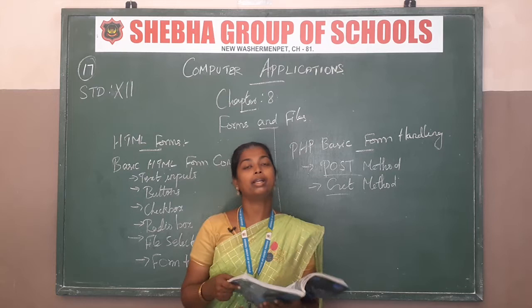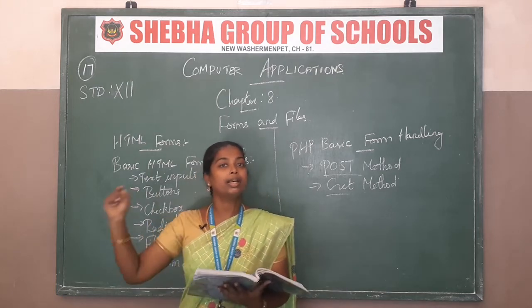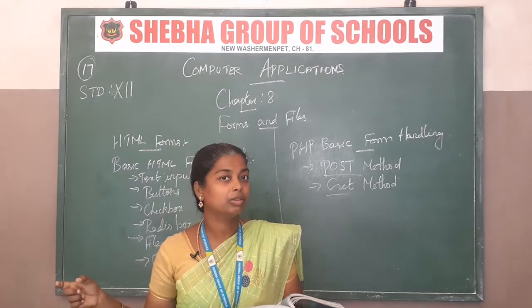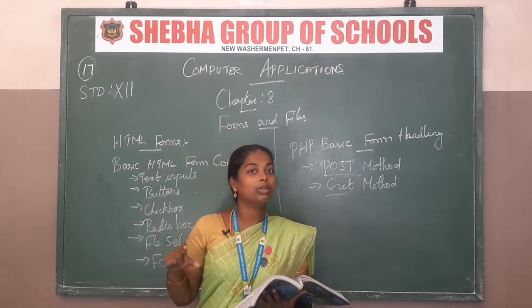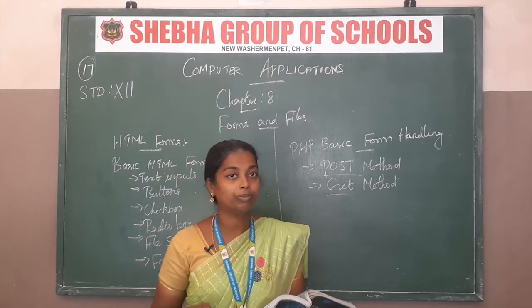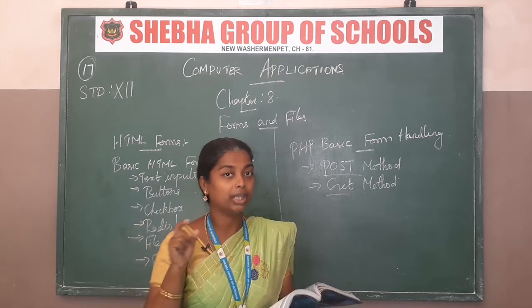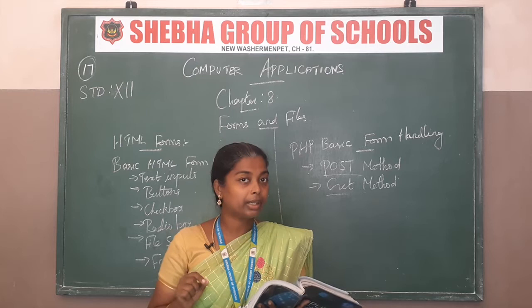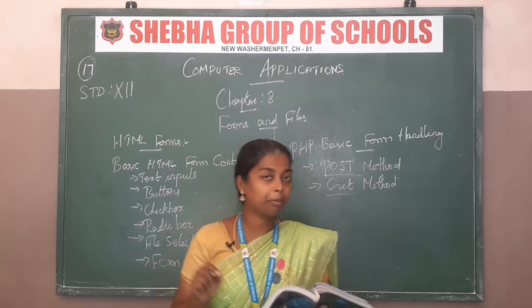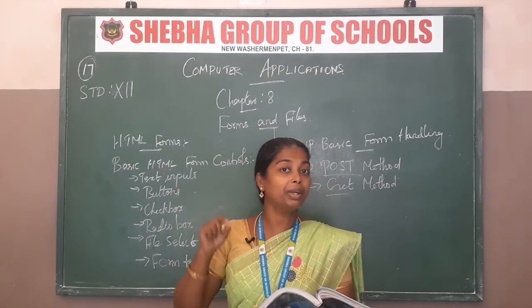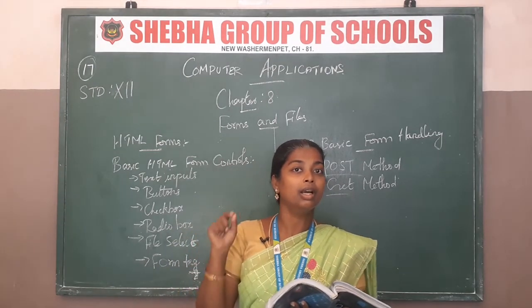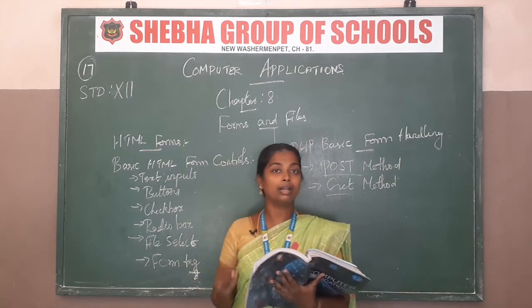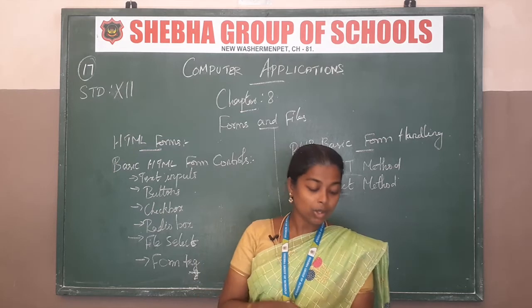For example, a registration form contains name, age, and qualification. Name uses a label and text box. Qualification uses a combo box or check box. These are the kinds of controls used in a registration form.